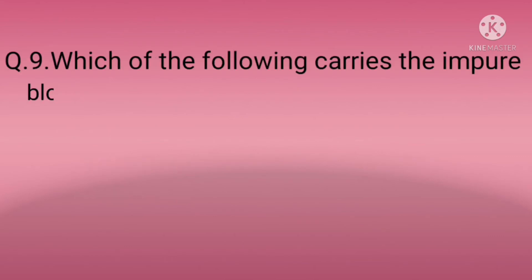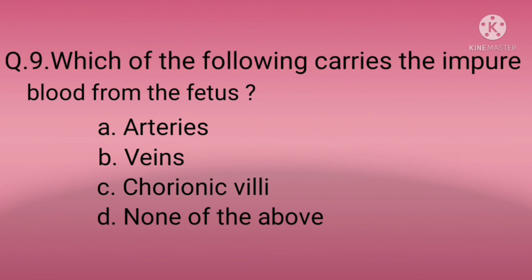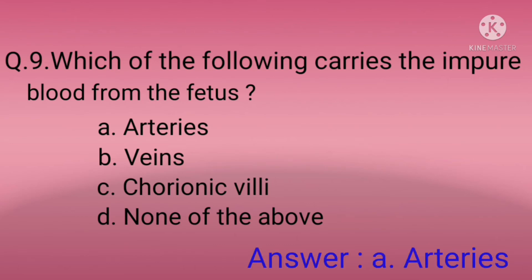Question nine: Which of the following carries impure blood from the fetus? Option A: Arteries, Option B: Veins, Option C: Chorionic villi, Option D: None of the above. The correct option is A — arteries.